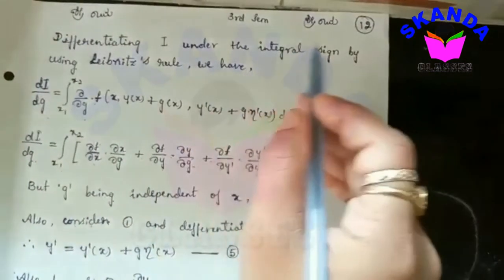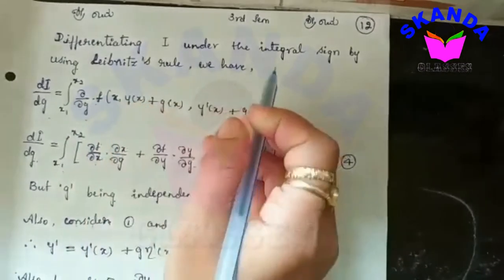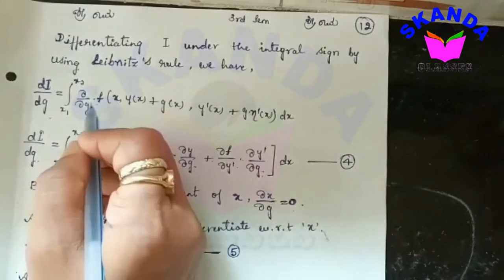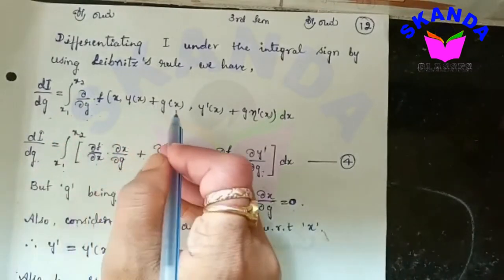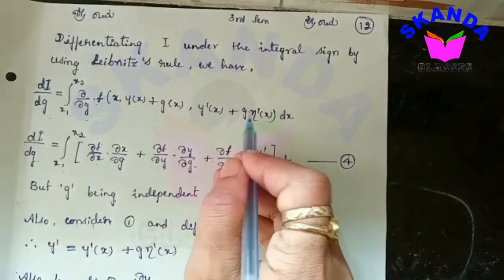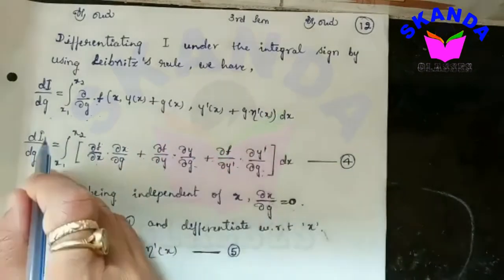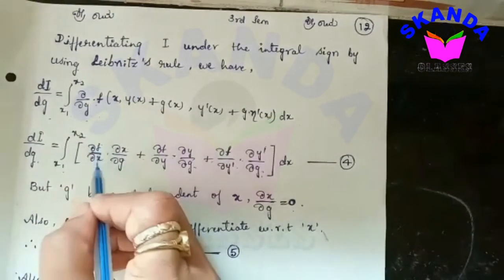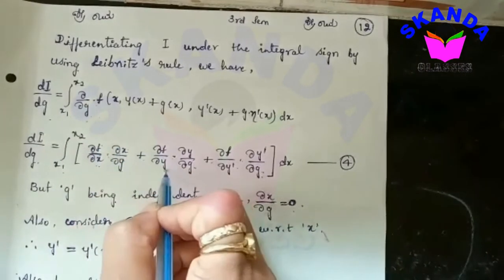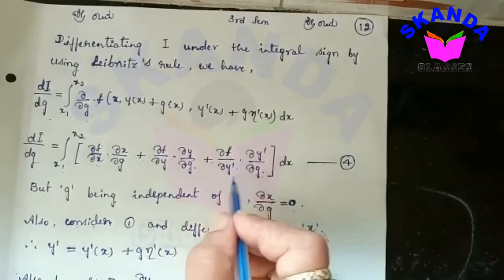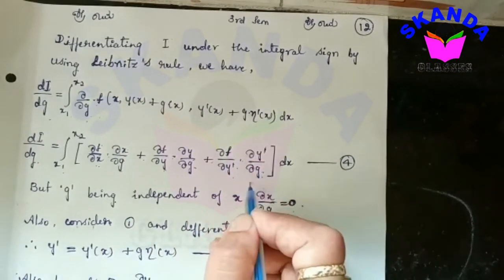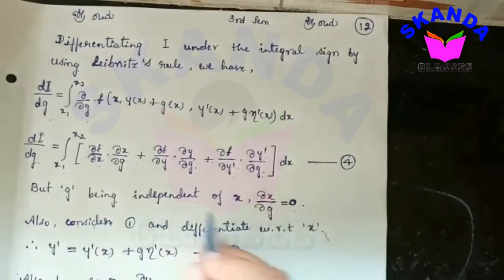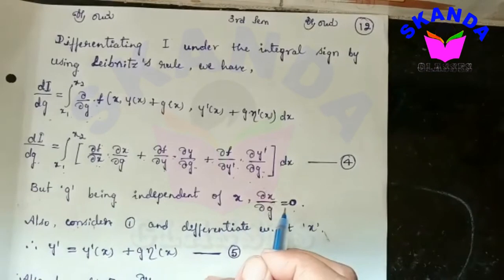Differentiating i under the integral sign using Leibniz rule, we have di/dg equals the integral from x1 to x2 of ∂/∂g of f(x, y(x) + g·η(x), y'(x) + g·η'(x)) dx. Applying the chain rule: di/dg equals integral from x1 to x2 of [∂f/∂x · ∂x/∂g + ∂f/∂y · ∂y/∂g + ∂f/∂y' · ∂y'/∂g] dx. But since g is independent of x, ∂x/∂g is always equal to 0.